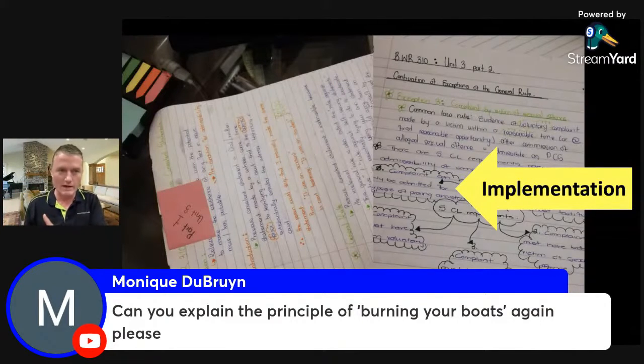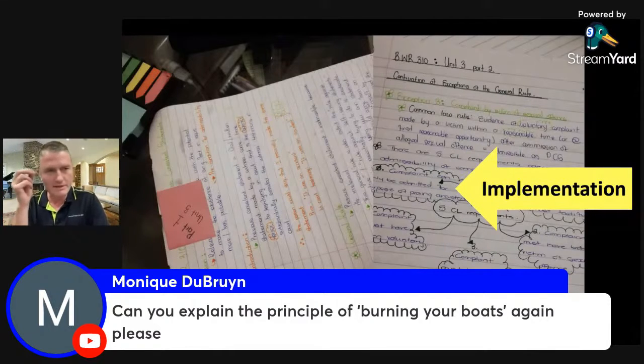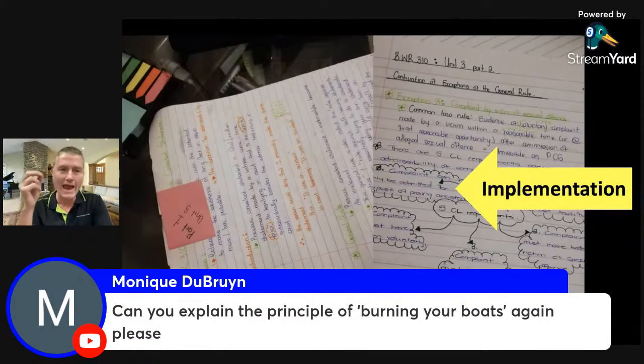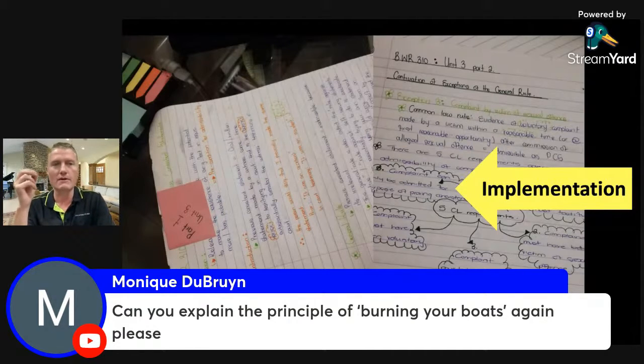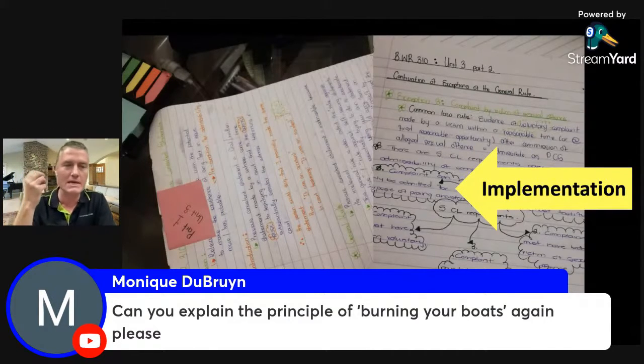If they needed to retreat, they would need those boats to get away, otherwise they'd be captured. But the change in mindset once they had burnt their boats meant that they had no escape route. They could not think about a Plan B because there just was no option for a Plan B.